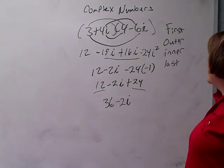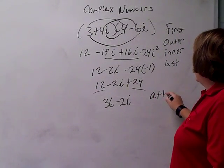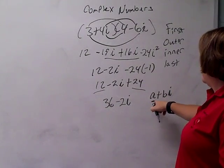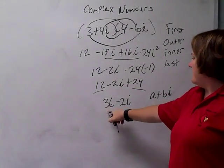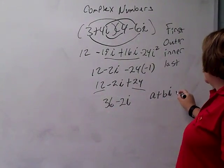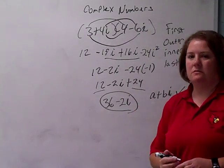Am I in standard form? Remember standard form is a plus bi. That's your real part and your imaginary part. So I've got my real and my imaginary. Yes, I'm in standard form. 36 minus 2i.